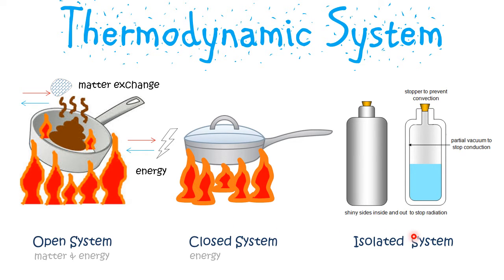In an isolated system, there is no energy or matter exchange with the surroundings. We have an example of a thermos flask here — there is no energy exchange with the surroundings, no heat lost or gained, and there is no matter exchange with the surroundings.